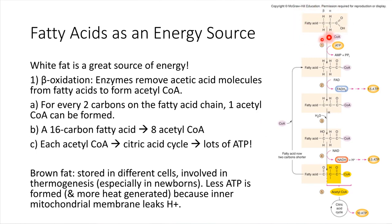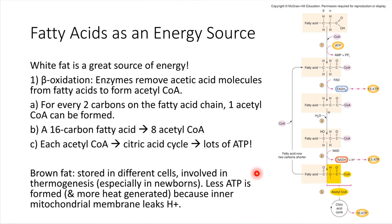Starting with a fatty acid, that chain goes through a series of modifications where it gets snipped into pieces — two carbons get trimmed off at a time, and each set of two carbons essentially becomes a molecule of acetyl-CoA, which can then enter the citric acid cycle. So if we started with a fatty acid chain of 16 carbons, that would generate eight acetyl-CoA molecules, which can end up giving us a lot of ATP recovered from stored fatty acids.